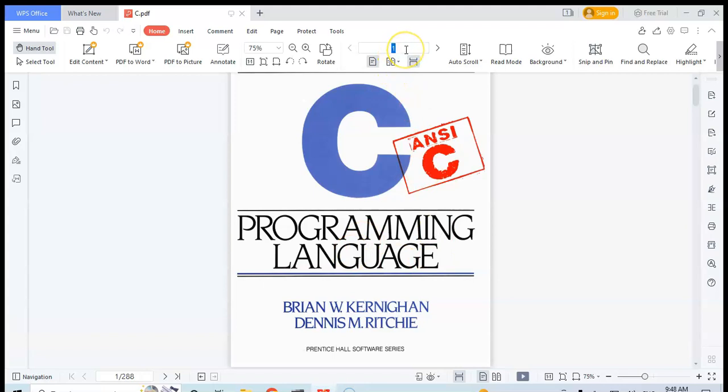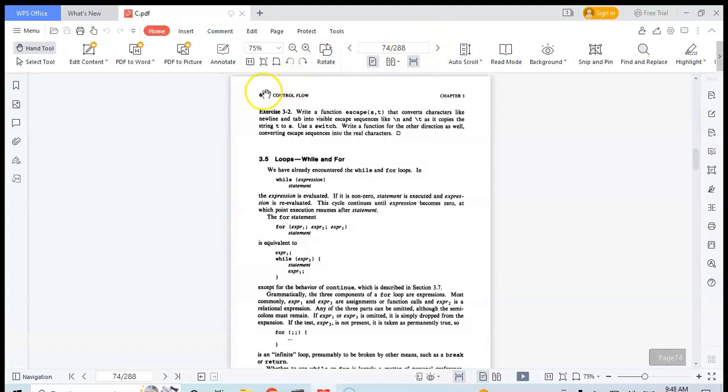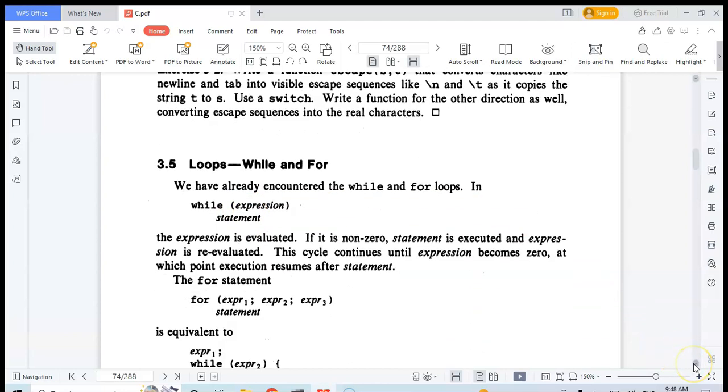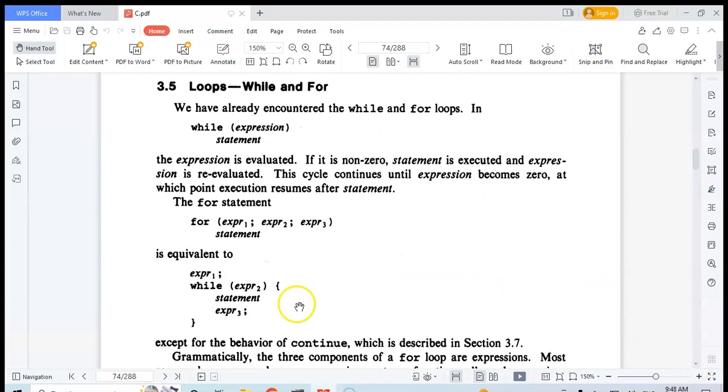If you go to page number 74, which is page number 60 here, we can zoom in. Loops - while and for - is here. It's something like this: while expression statement, and you can read through it. It's like this: expression 1, expression 2, expression 3.